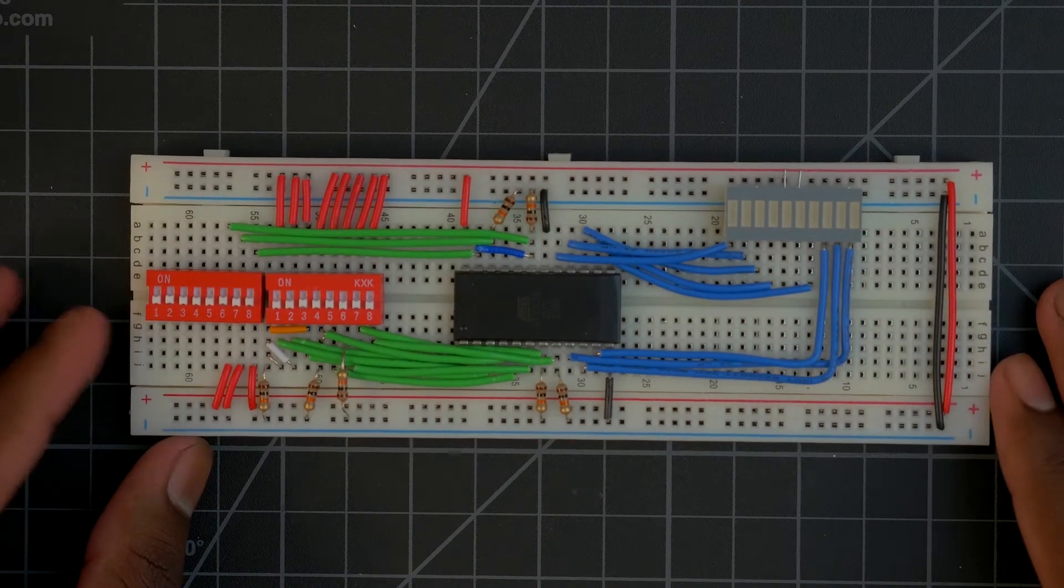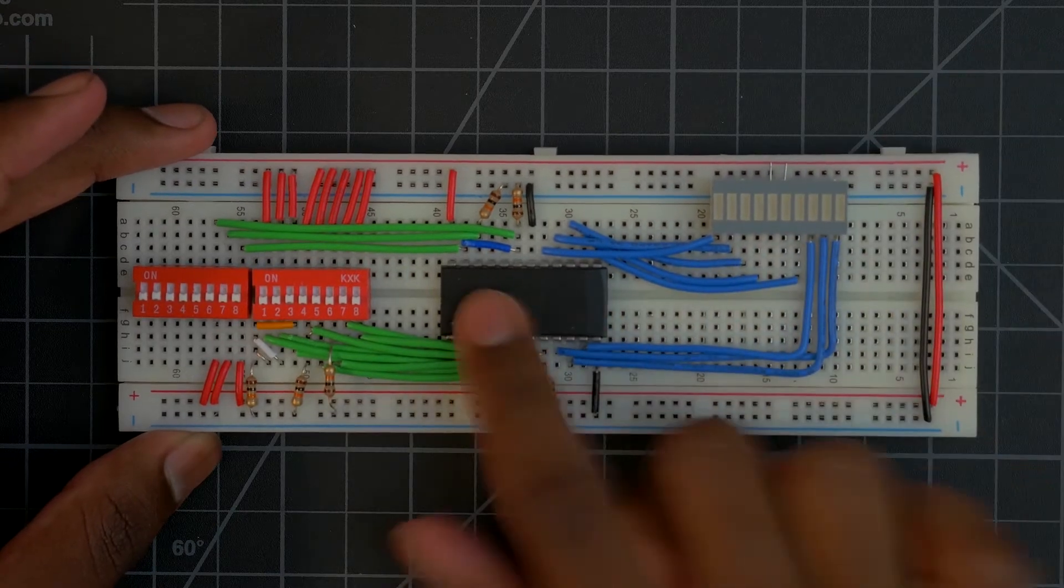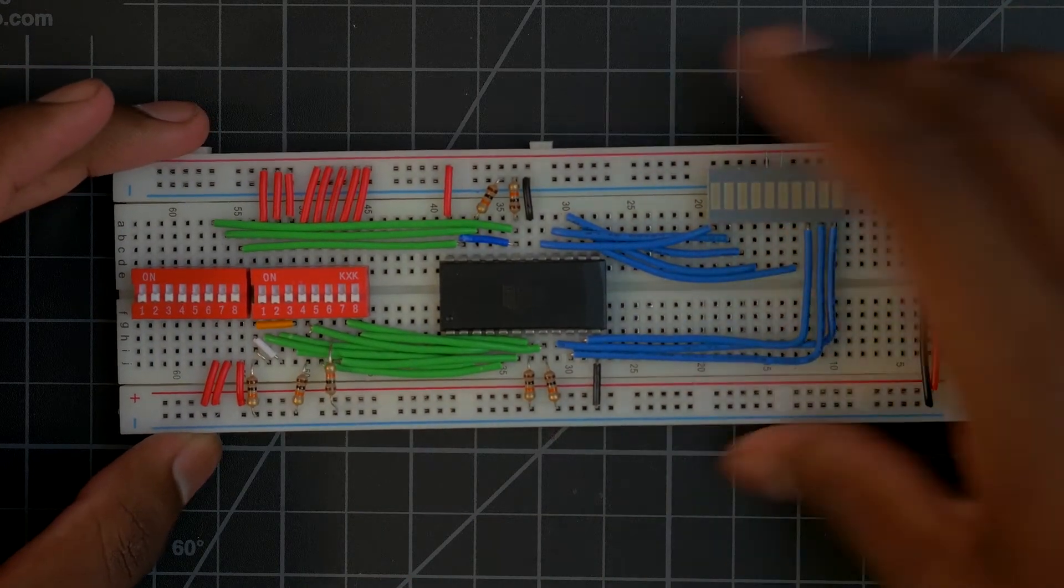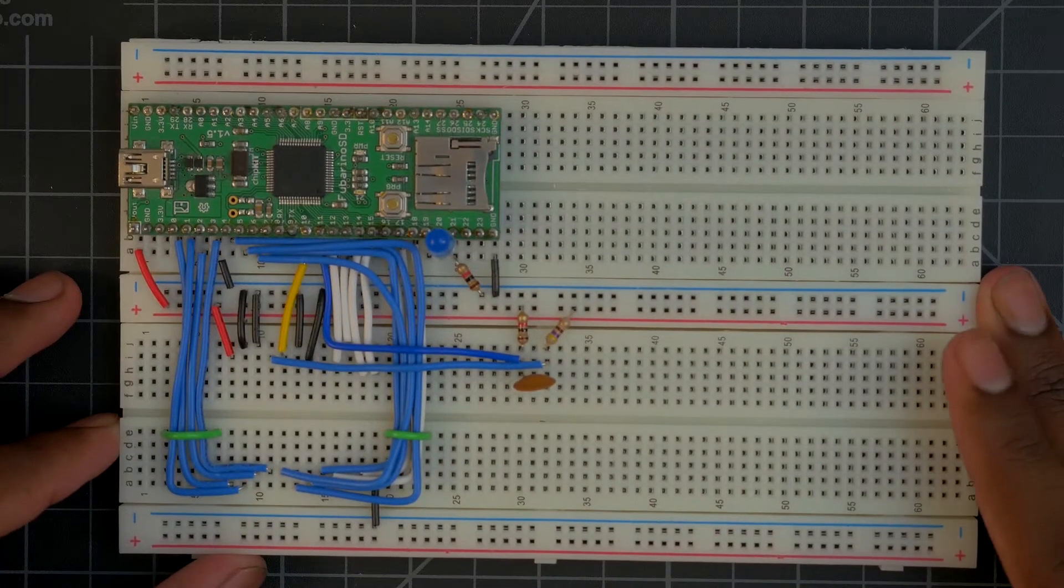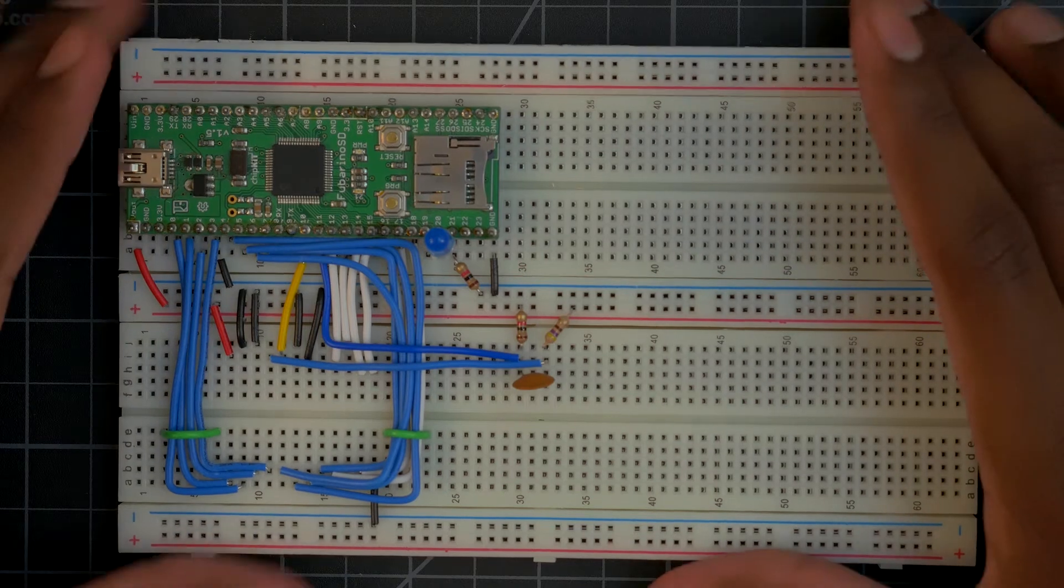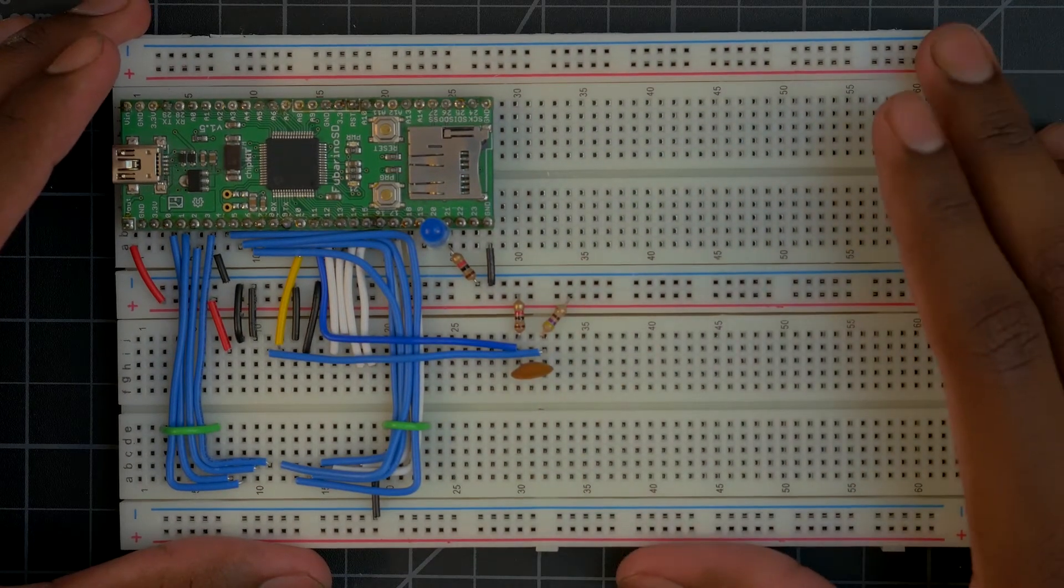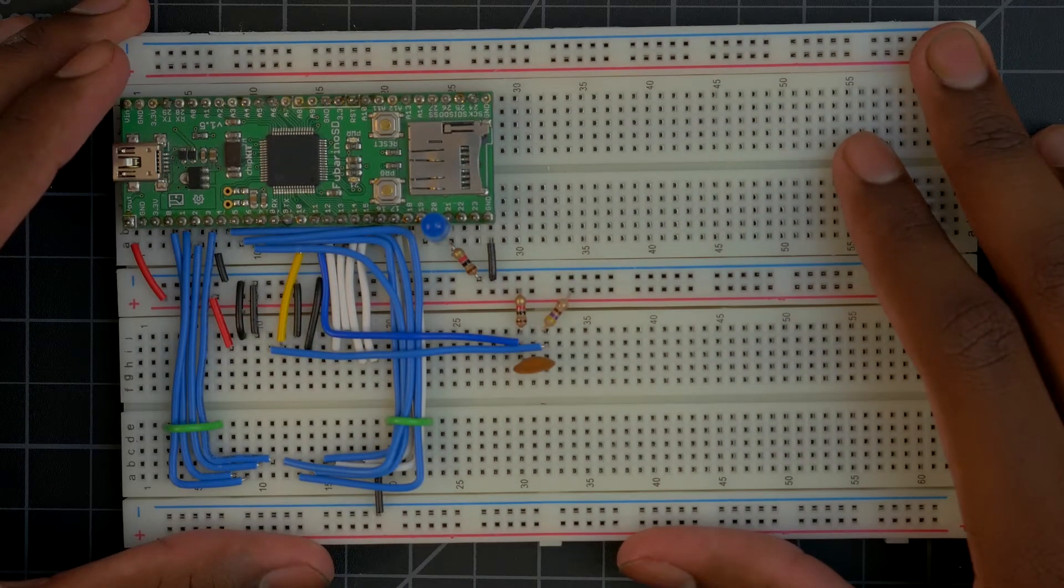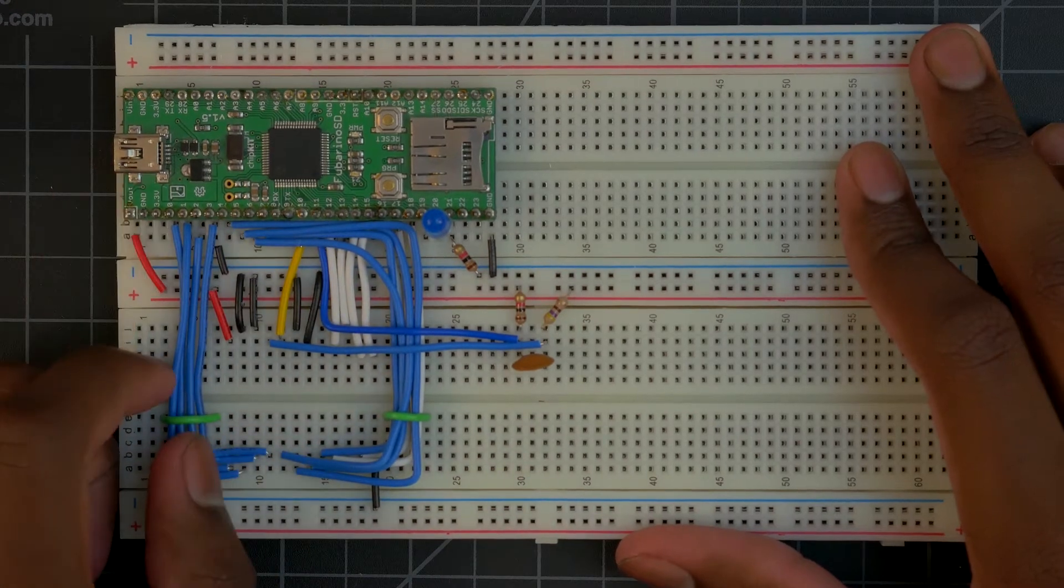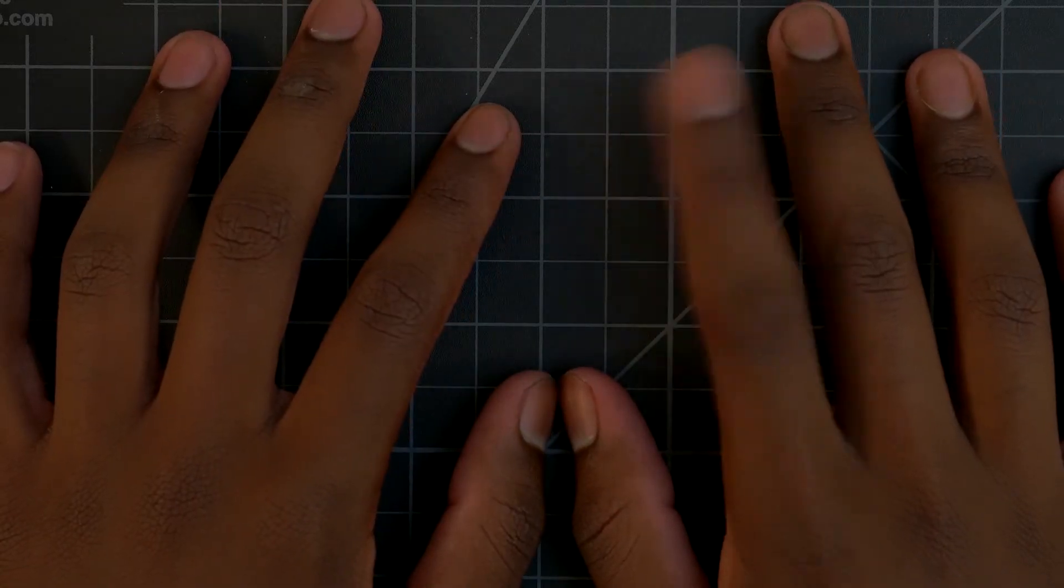Some of you guys might recognize this. This is what we did two videos ago. This allowed us to read from our EEPROM by setting an address here. That was wrong. Some of you might recognize this. It looks a little bit different now. This is what we did in the last video in the CPU series. This led us to our EEPROM via an Arduino and a computer using this USB port. This was also wrong.